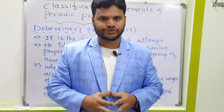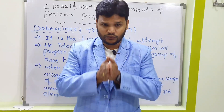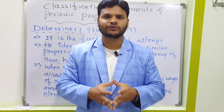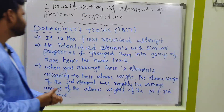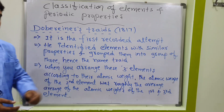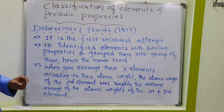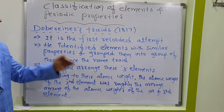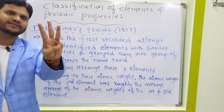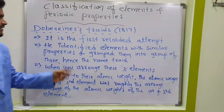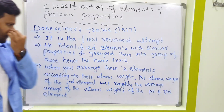Let's discuss the history and background of the periodic table. What was the first recorded attempt? In the 18th century, one German chemist named Döbereiner identified elements with similar properties and grouped them into groups of three — hence the name 'triad.' Triad means three. This concept is applicable for groups, not periods.